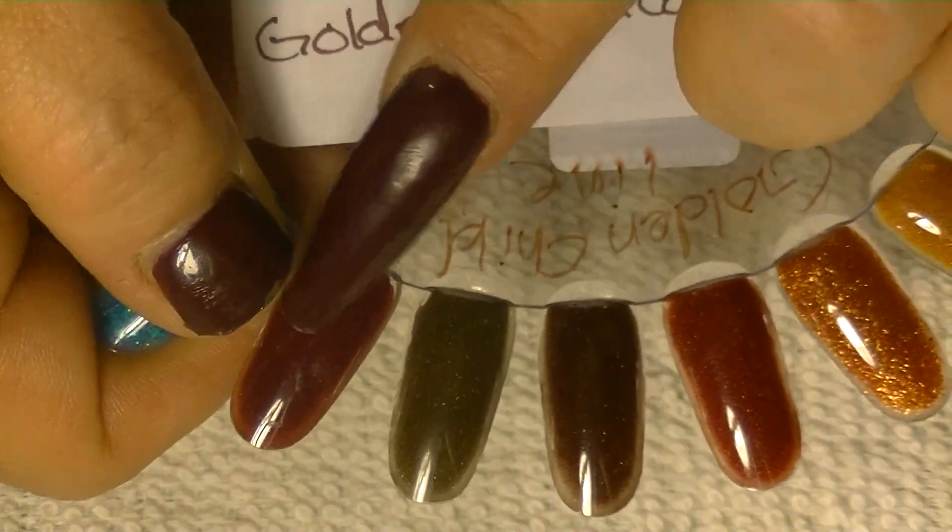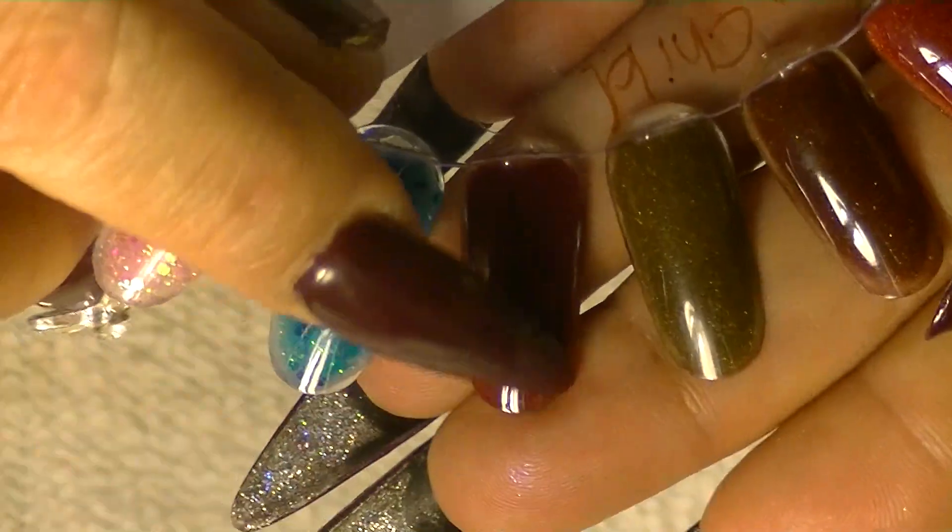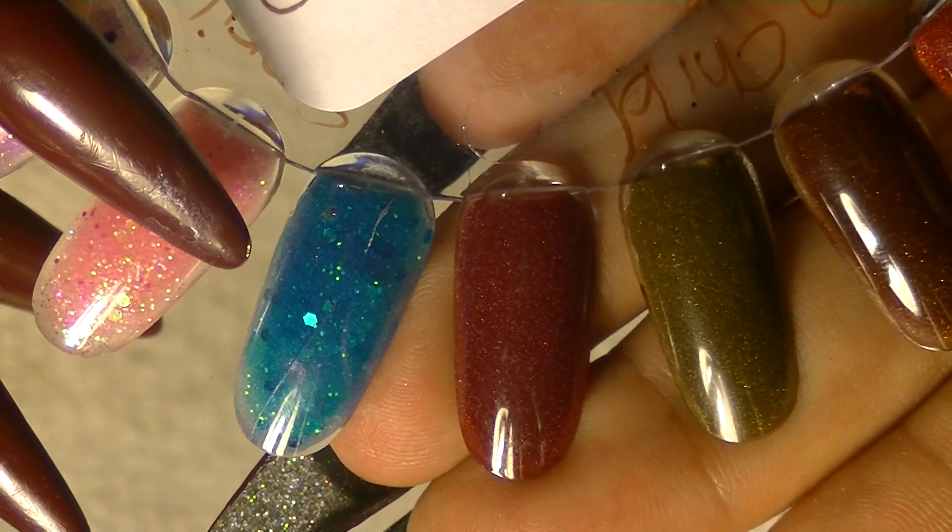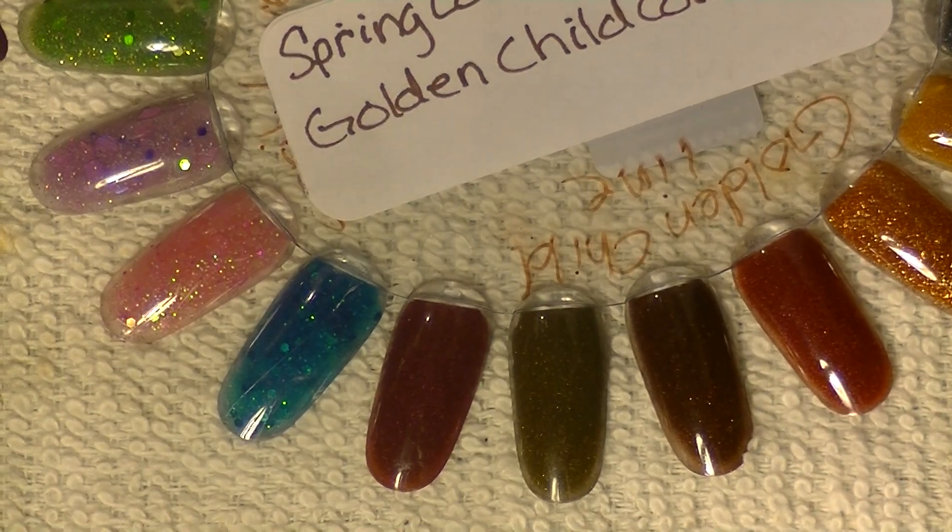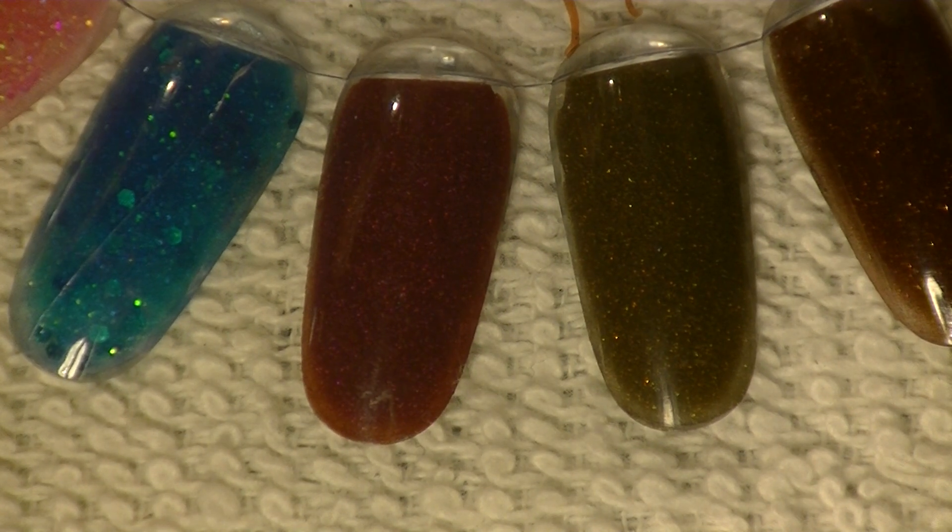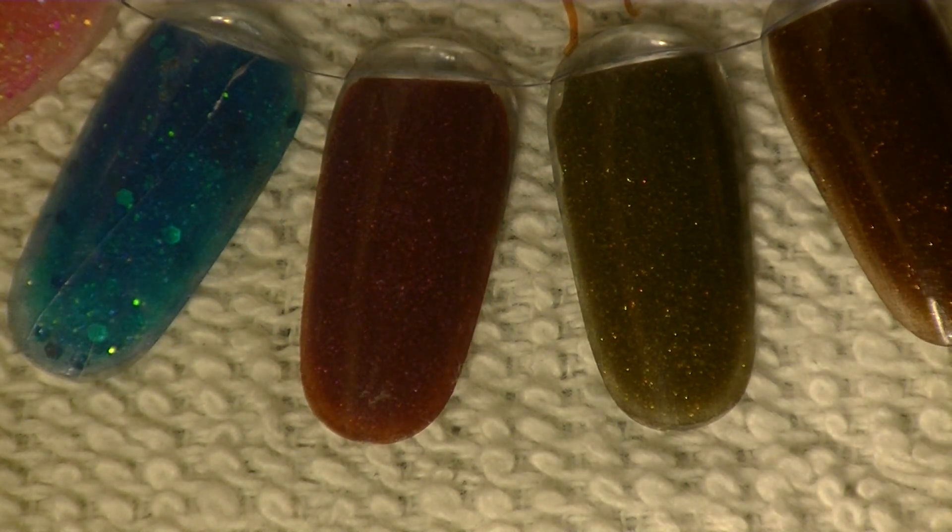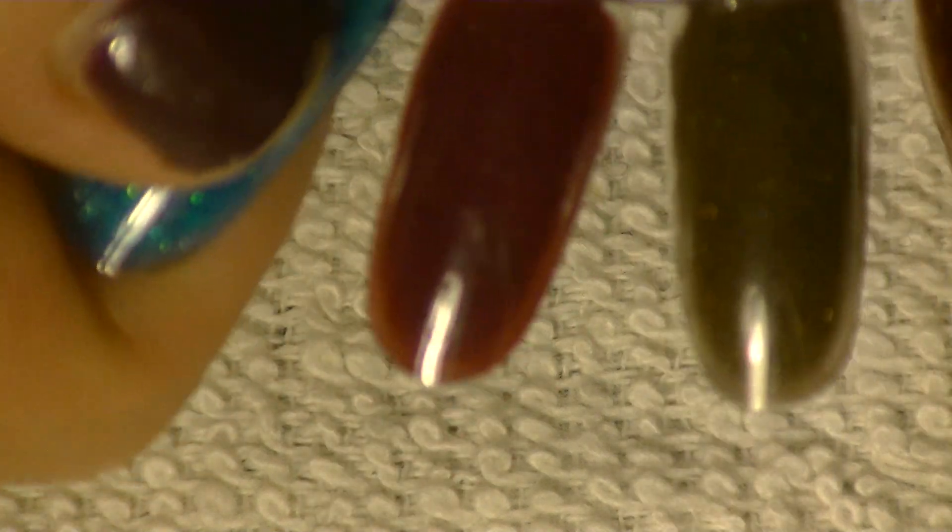But this is my Golden Child Collection, which is just the first one right here, which is really, really pretty. Let me just bring it down to you. I don't have to be all up there. I hope you can see these colors because these colors are so freaking pretty. And I decided to put it as anybody seen that movie, the Golden Child. I love that movie. That's a movie from back in the day with Eddie Murphy.